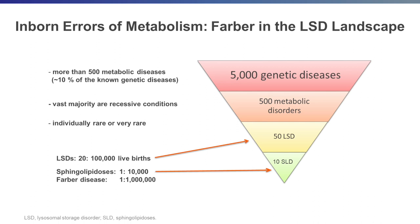Within this group of 50, we have 10 that fall into the sphingolipidosis category. This is a very common group of diseases, probably with a prevalence of 1 in 10,000, which is relatively common when you compare it to Farber — one of these sphingolipidoses — which has a one in a million prevalence or birth incidence. So most of the talk will focus on lysosomal storage disease, and within that group, the 10 sphingolipidoses, with Farber disease as a component of that sphingolipidosis group.